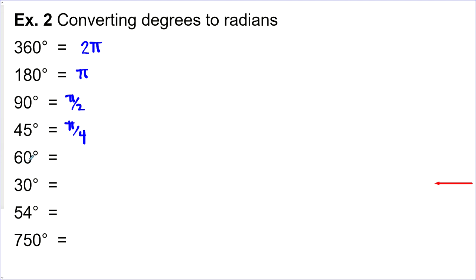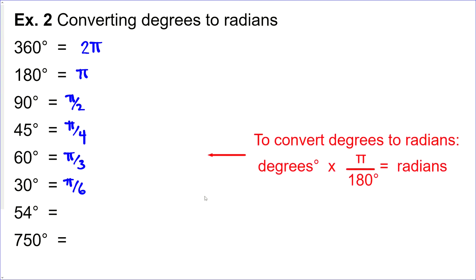Next: 60 degrees. If you look at 180 and divide by three, you get 60. So π divided by three is π/3. 180 divided by six is 30, so π divided by six is π/6. Then we get to the odd ones: 54 degrees and 750 degrees. We need a formula. You can set up a ratio, or use this equation: degrees times π/180° — the degree units cancel and you're left with radians. So 54 degrees times π/180° equals 3π/10.